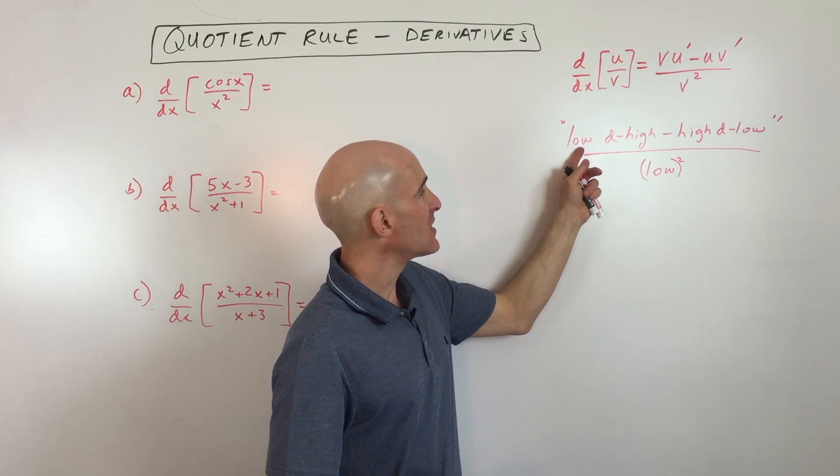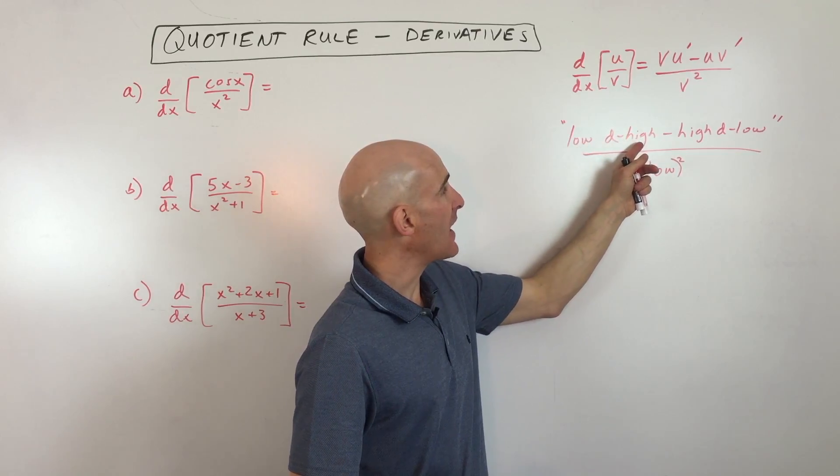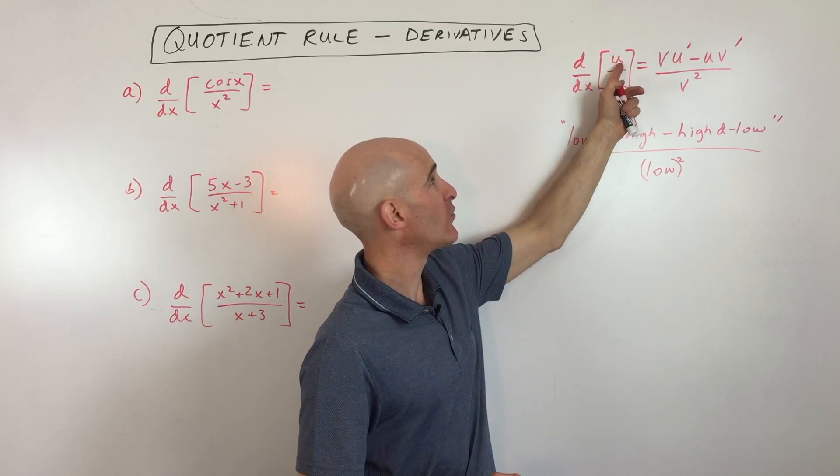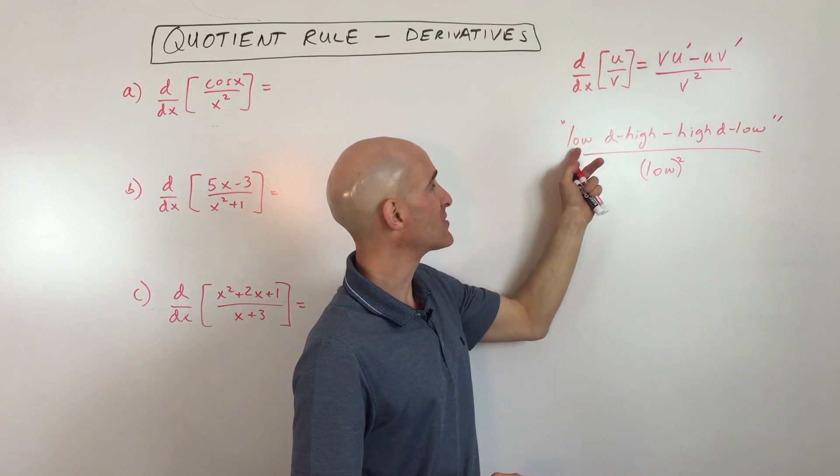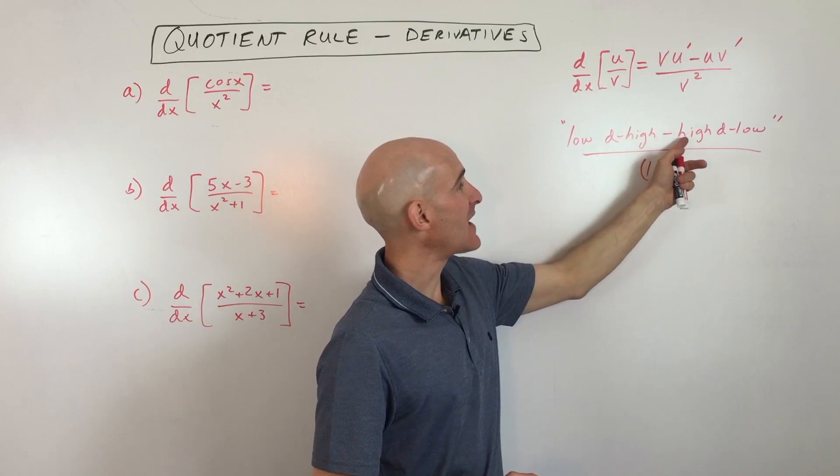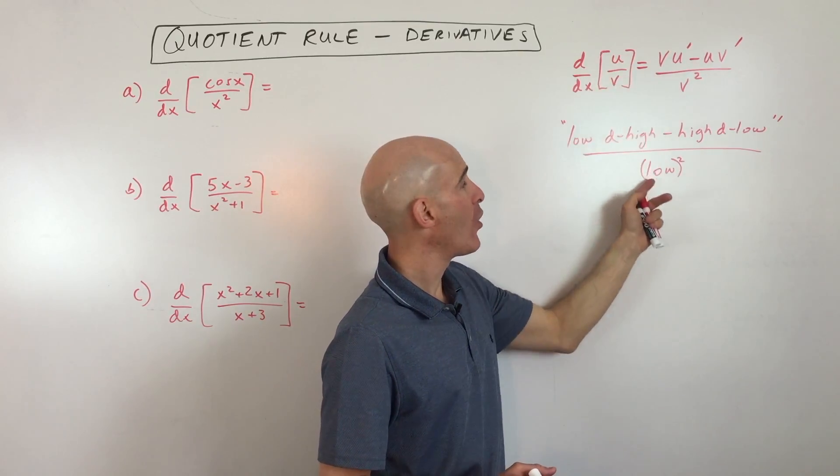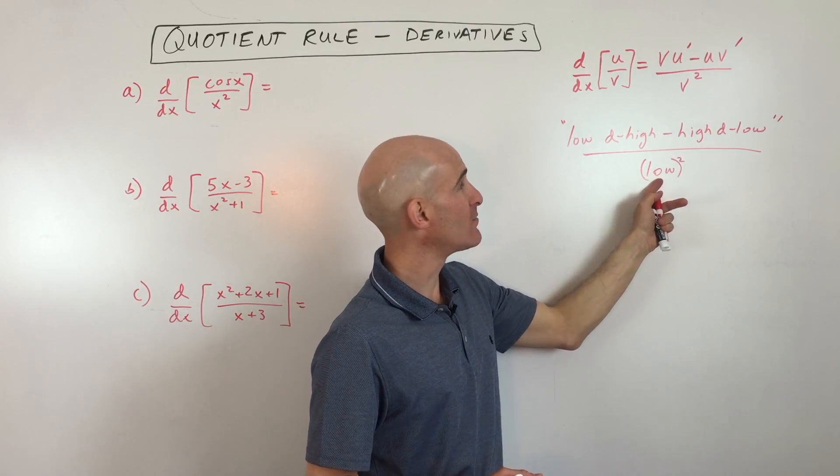What you do is you say low D high. So that means you take the one that's low in the denominator times the derivative of what's in the numerator, that's high, that's above. So low D high minus high D low, so high times the derivative of what's below in the denominator over the square of what's below.